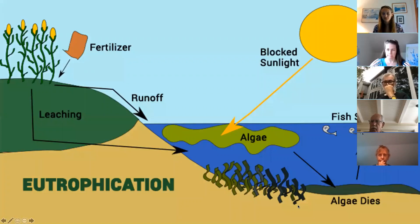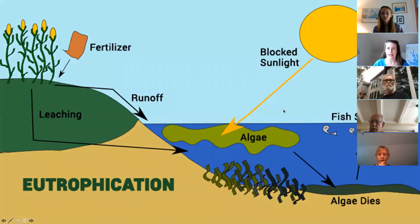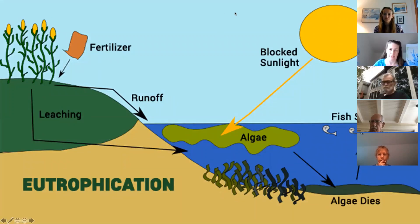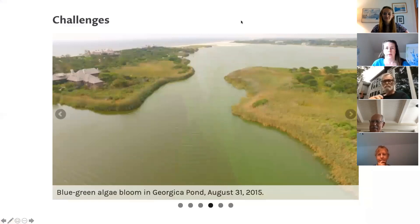Eutrophication is when you have so much fertilizer — nitrogen or phosphorus — leaching into your water system that algae is blooming all the time and you get into a cycle of decay. When the algae dies, microbes in the sediment suck out the oxygen, creating a hypoxic system. If it's too widespread, fish and other organisms can eventually die. This is what we want to avoid. Eggertown Great Pond is not eutrophic.